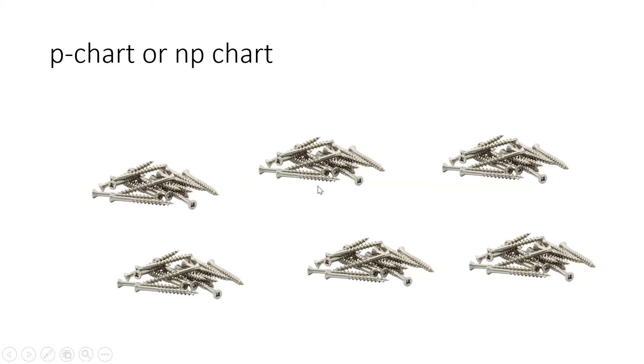We can multiply that proportion defective times the sample size, then we can see how many defectives in each of those machines. Imagine that these are coming from different machines but we are inspecting the same number. If it's not the same number, then we cannot use np.